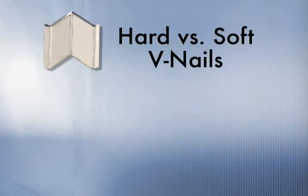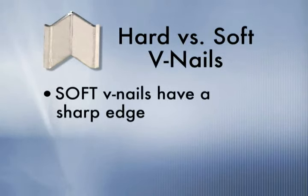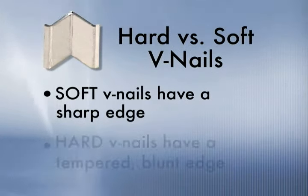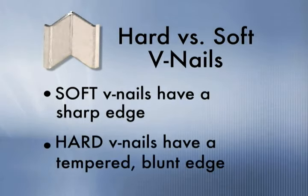Hard wood v-nails versus soft wood v-nails. Soft wood v-nails have a sharp edge to cut into the wood molding. Hard wood v-nails have a tempered blunt edge better suited for hardwoods.